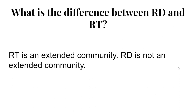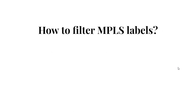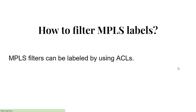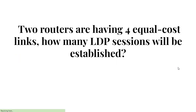Question 18: How do you filter MPLS labels? Answer: MPLS labels can be filtered using Access Control Lists, or ACLs. Question 19: Two routers have four equal cost links. How many LDP sessions will be established?